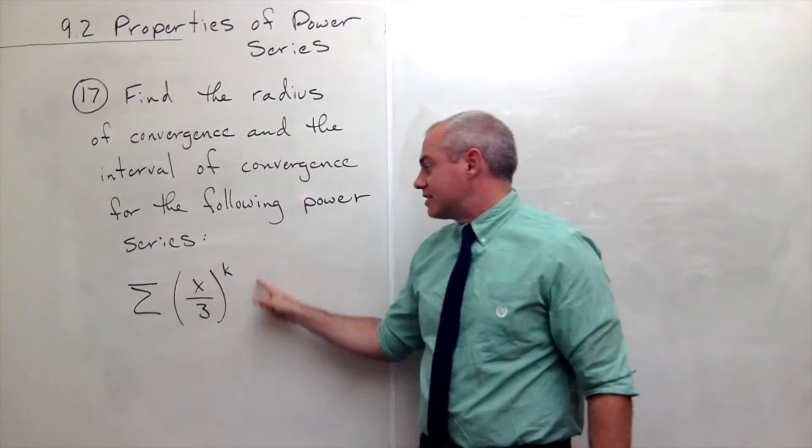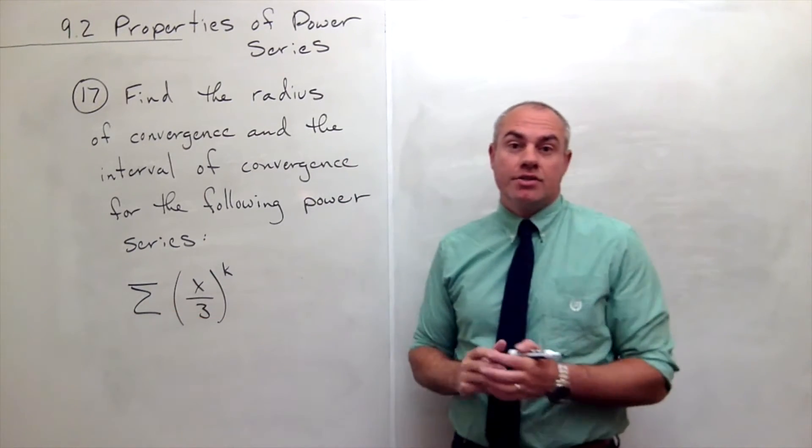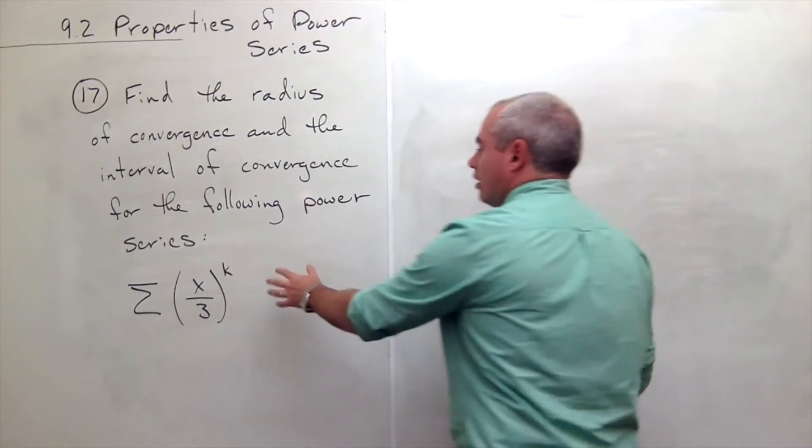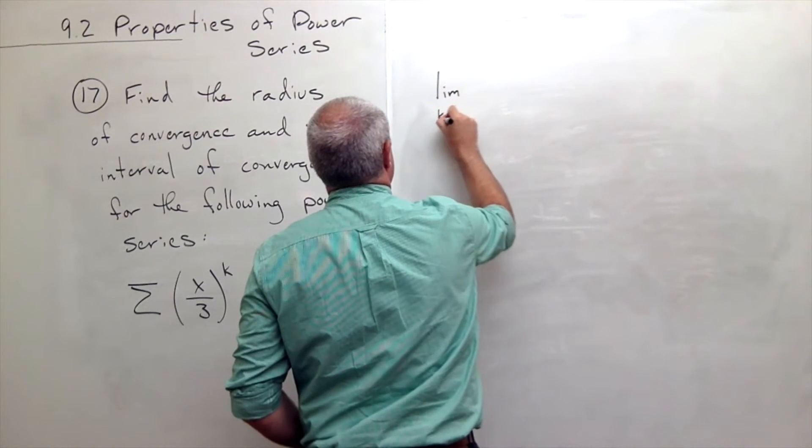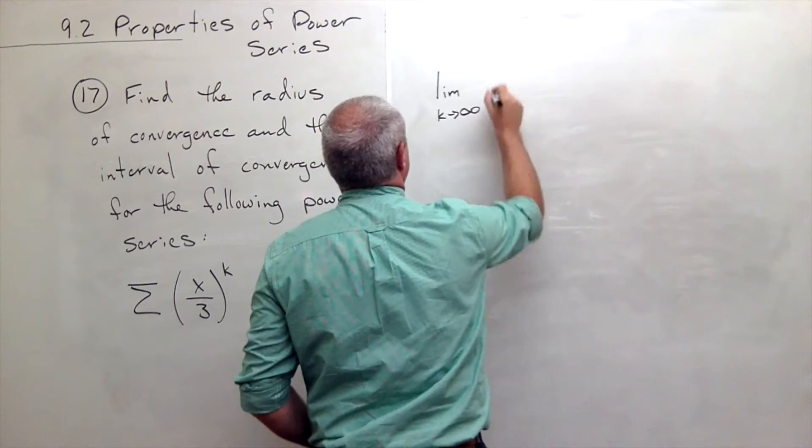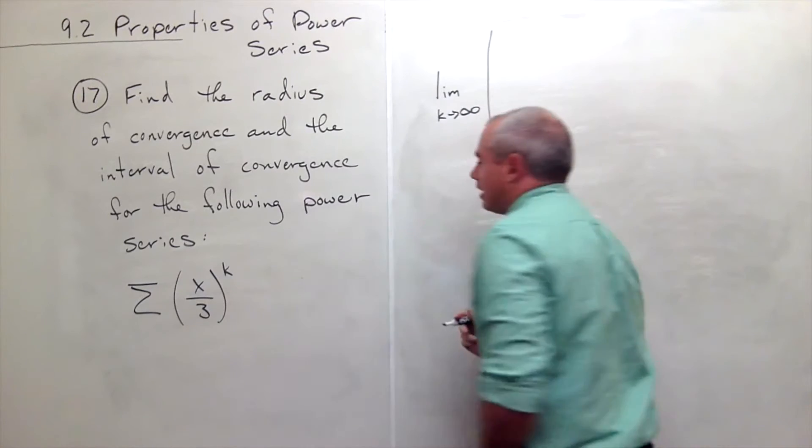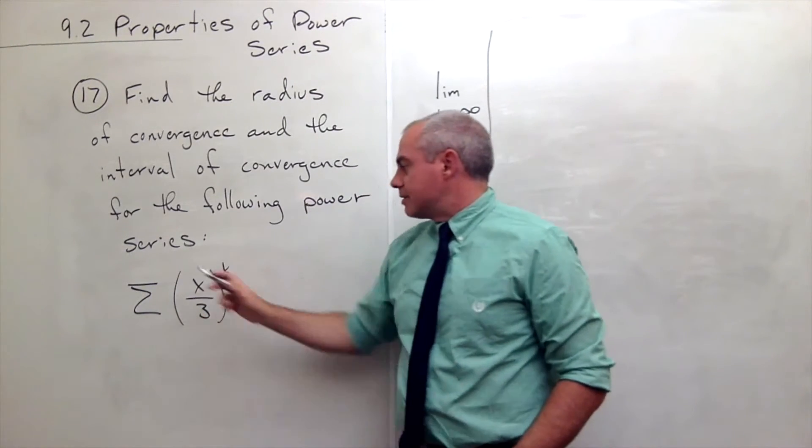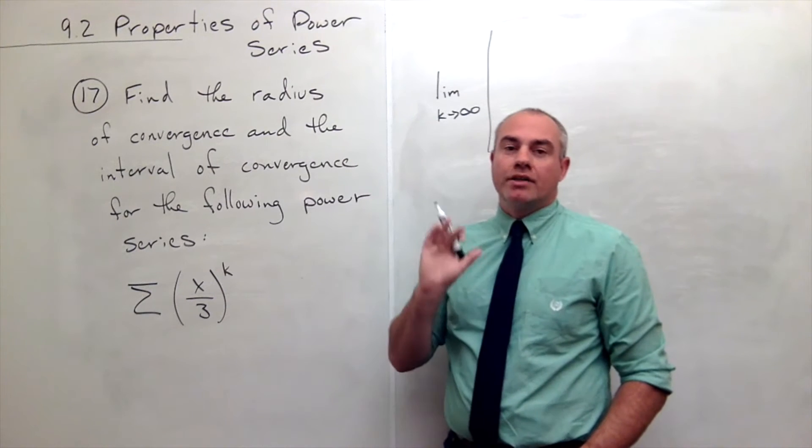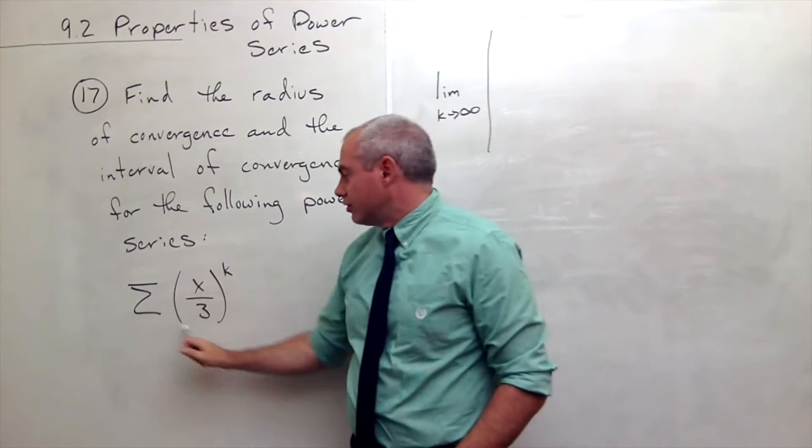So I want to know, when does this thing converge? The ratio test tells me, let's look at the limit as k goes to infinity of, and this is important, we need an absolute value around this. We want all of these guys to be positive.